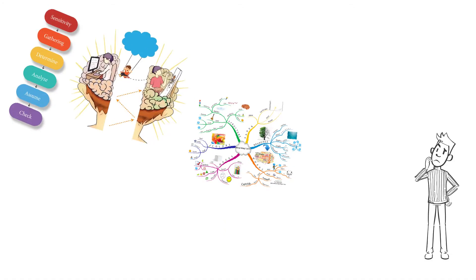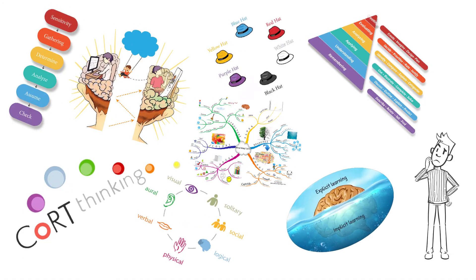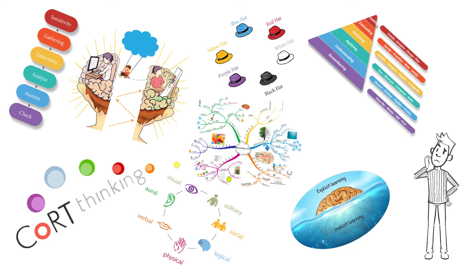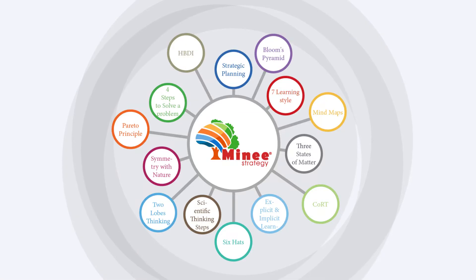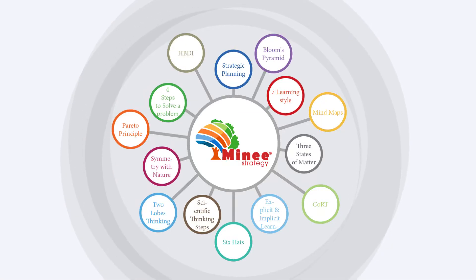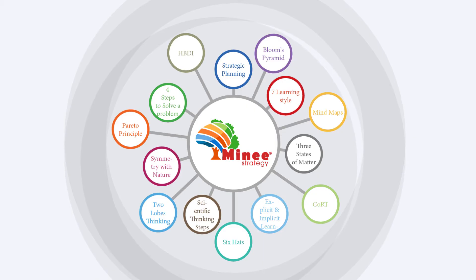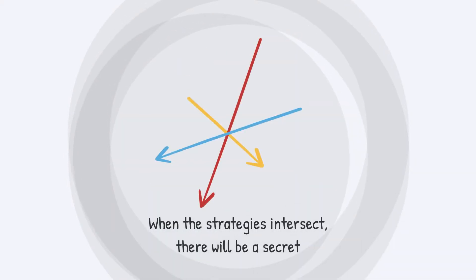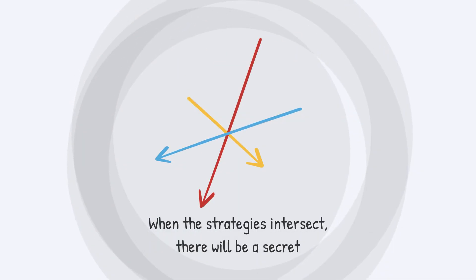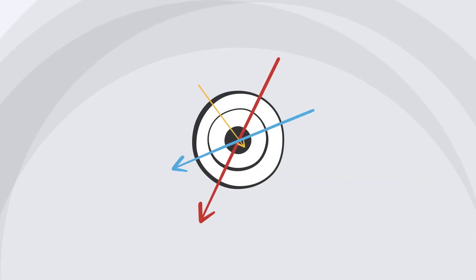Now, if MINE shares all these trends, how can we imagine the relationship between them? This picture summarizes how MINE can manipulate some of these trend strings through its strategic position, where all these trends pass. When the strategies intersect, there will be a secret. Is this the point that attracts the leaders' and specialists' minds? Could be.